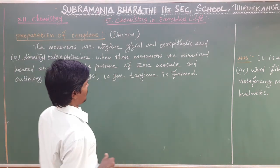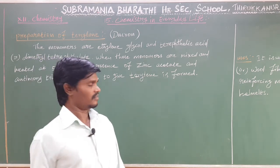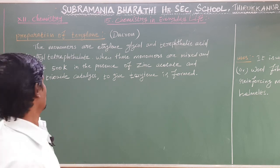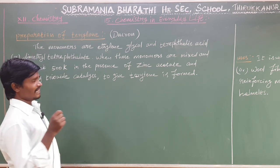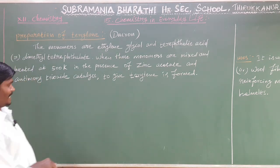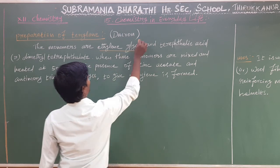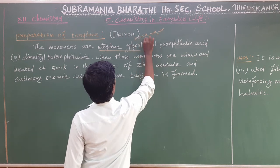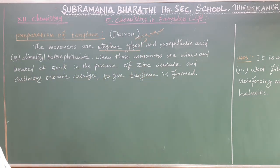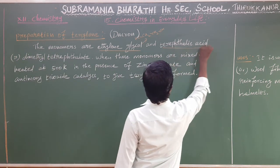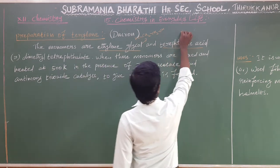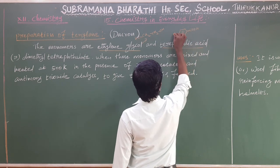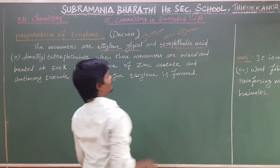So how do we prepare Terylene? The monomers are ethylene glycol. Ethylene glycol has a molecular formula CH2-CH2, with OH groups. The other monomer is terephthalic acid. Terephthalic acid is a benzene with two carboxylic acid groups.